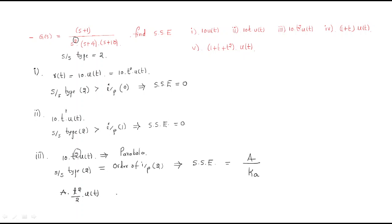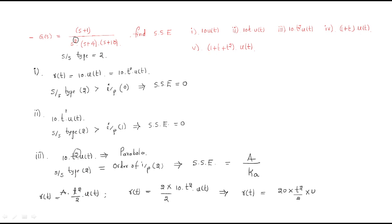Since the given signal 10·t²·u(t) is not in the standard parabola form a·t²/2·u(t), we convert it: multiply and divide by 2, giving r(t) = 20·t²/2·u(t). So the magnitude a = 20.